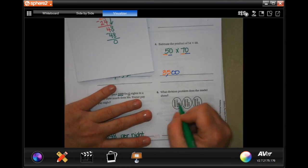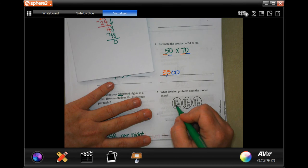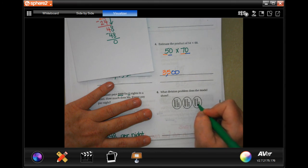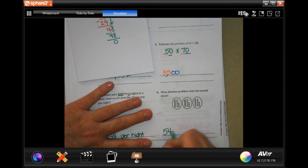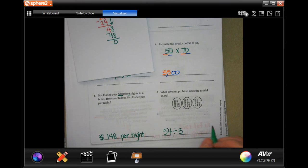What division problem does the model show? Well, all together, we have 10, 20, 30, 31, 32, 33, 34, 35, 36, 37, 38, 39, 40, 41, 42, 43, 44, 45, 46, 47, 48, 49, 50, 51, 52, 53, 54 divided by one, two, three. And that's it, guys.